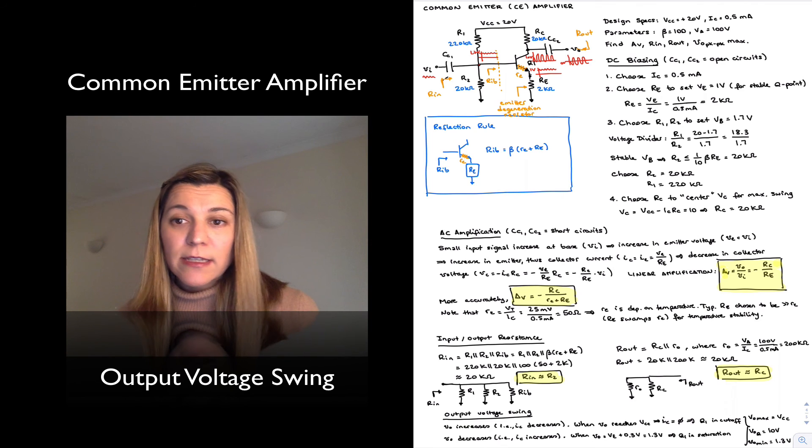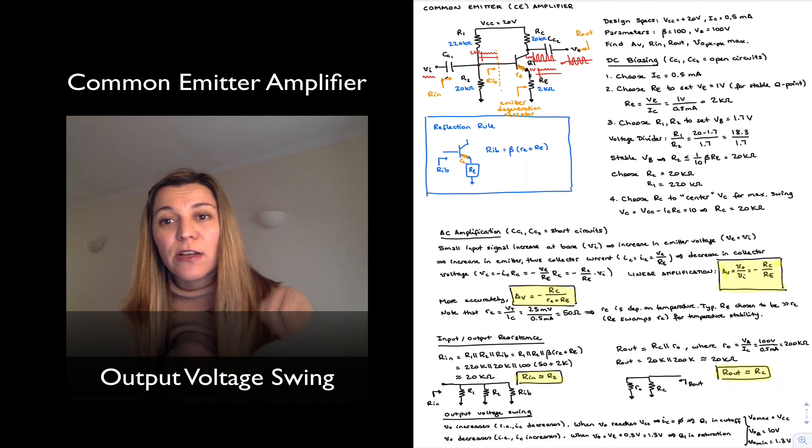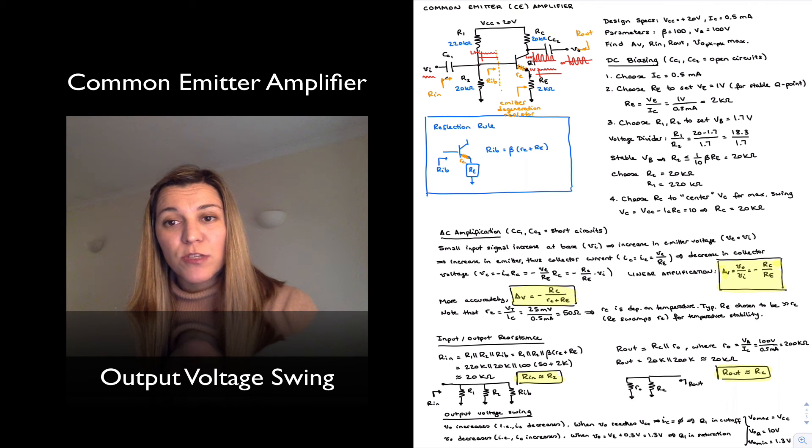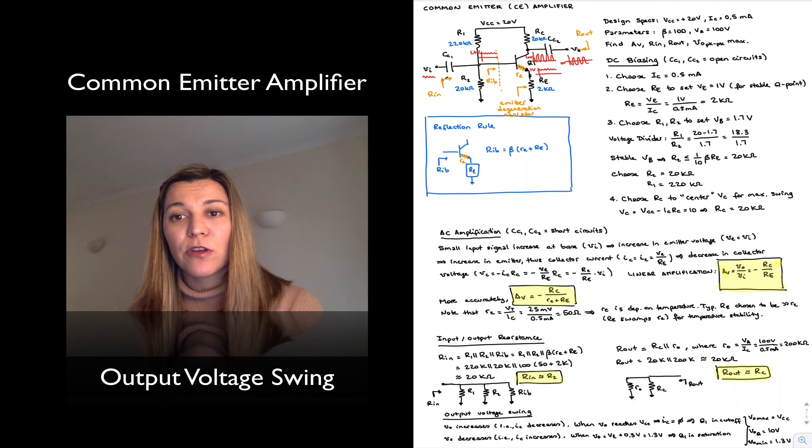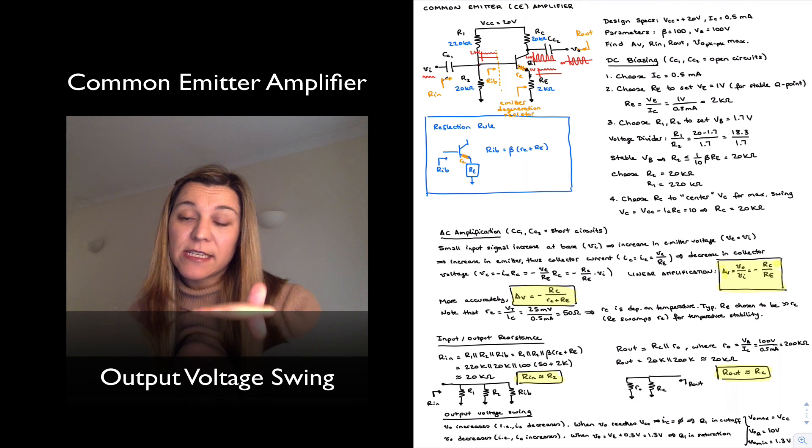We could try to center it more by increasing the value of VC. Originally, we set VC to 10 volts, which is halfway between VCC and ground. We could have set VC, the Q point value of the collector voltage, to be the midpoint between 1.3 volts and VCC.